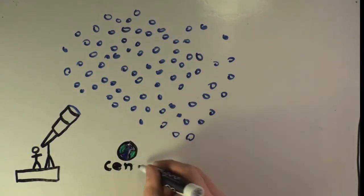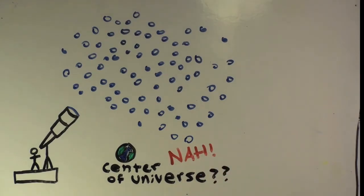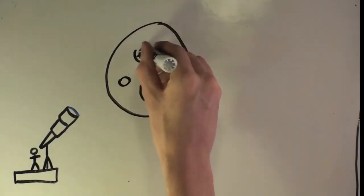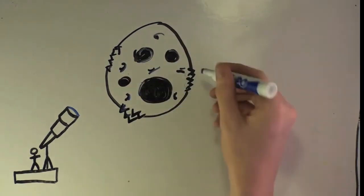This proved that there was much more to the universe than people had originally thought, making it unlikely that the Earth was the center of it. He then pointed his telescope at the Moon and saw mountains and geography on it, just like there is on Earth.